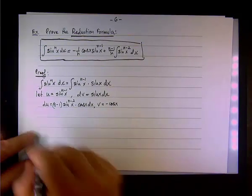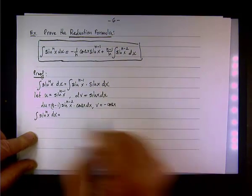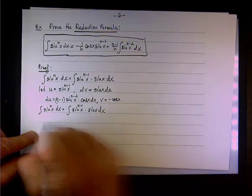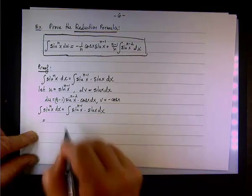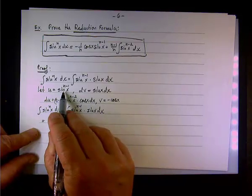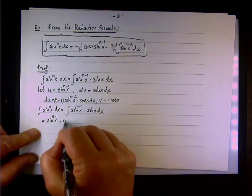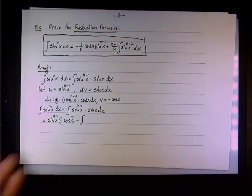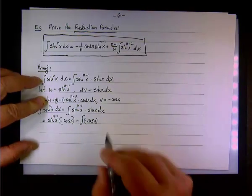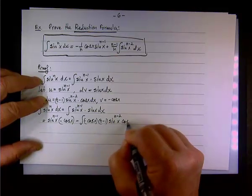Now integrate by parts. So the integral of sin x to the power of n dx equals the integral of sin x to the power of n minus 1 times sin x dx. This is u dv, which equals u times v. So u times v: u is sin x to the n minus 1, and v is negative cos x, minus the integral of v du. V is negative cos x and du is n minus 1 times sin x to the n minus 2 times cos x dx.